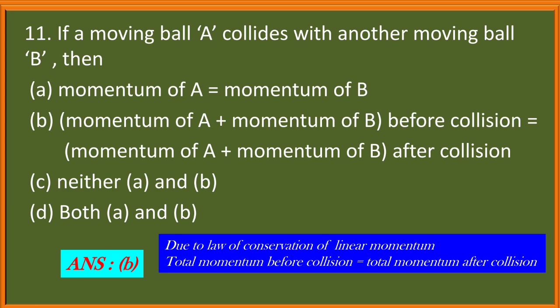Next question. Question 11. Momentum of A plus momentum of B before collision is equal to momentum of A plus momentum of B after collision. Options include: neither A and B, both A and B. So here the correct answer will be B. Due to law of conservation of linear momentum, we find that total momentum of the system remains conserved. Before collision and momentum after collision will be same. So the answer is B.